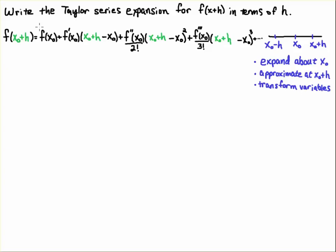So I'm going to approximate at x naught plus h, and when I do that and I enter or substitute x naught plus h in each of these parentheses, notice what happens. The x naughts cancel, and when the x naughts cancel, you're just left with h's.